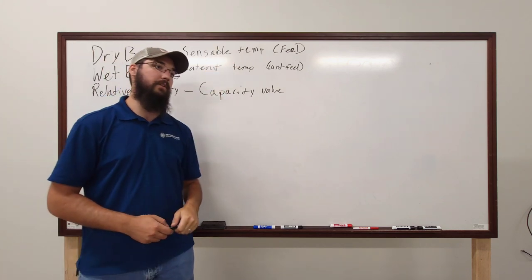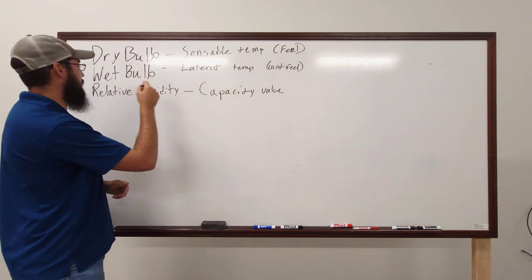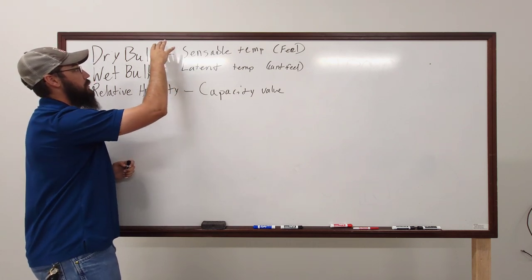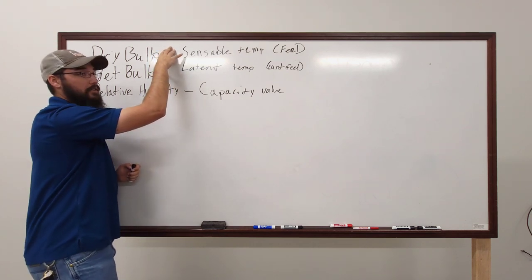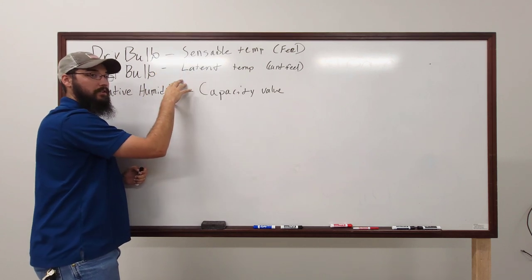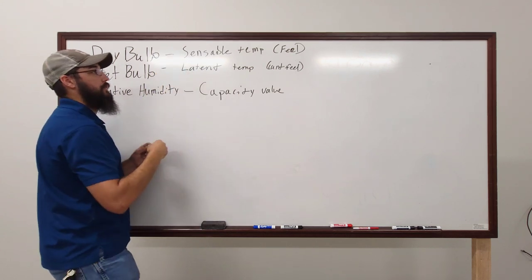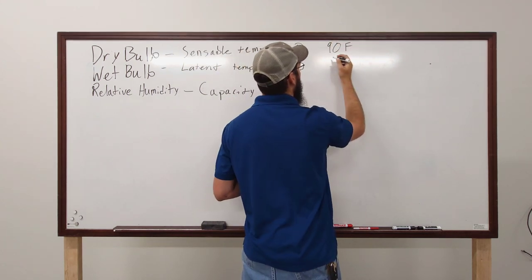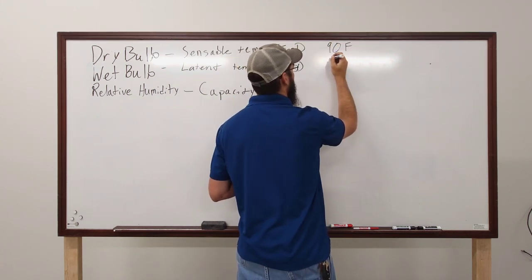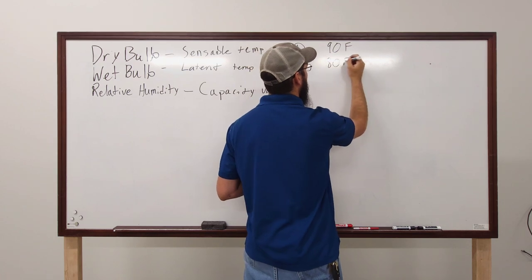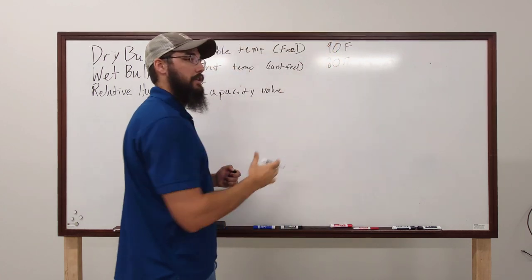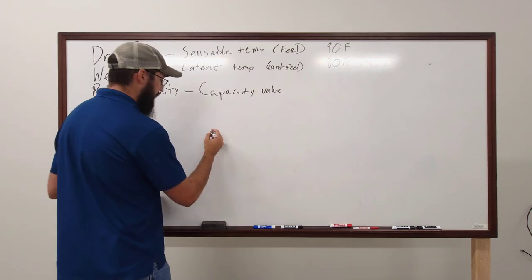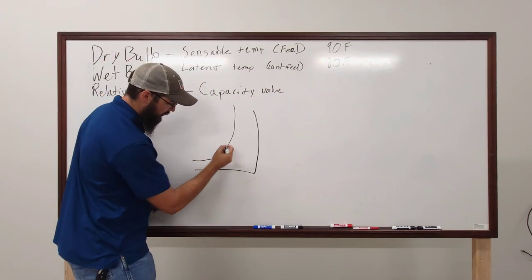A wet bulb temperature will always be lower than your dry bulb without fail. If they are the same, you're at 100% humidity. Be careful: if your dry bulb is 90°F and your wet bulb is 80°F, you cannot divide one into the other to get relative humidity. It's not that simple — you need to use the psychrometric chart.